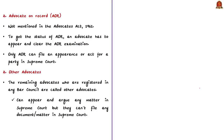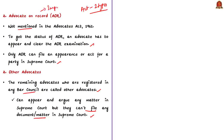The category of advocate on record is not mentioned in the Advocates Act of 1961. To get the status of advocate on record, an advocate must clear the advocate on record examination. Once they become advocate on record, they can file an appearance or act for a party in the Supreme Court — these are the people eligible to file a petition and practice in the Supreme Court. The remaining advocates, registered in any Bar Council, are called other advocates. These advocates can appear and argue any matter in the Supreme Court, but they cannot file any document or matter in the Supreme Court. The advocate on record plays an important role in filing cases before the Supreme Court, and can work independently or under a senior advocate.